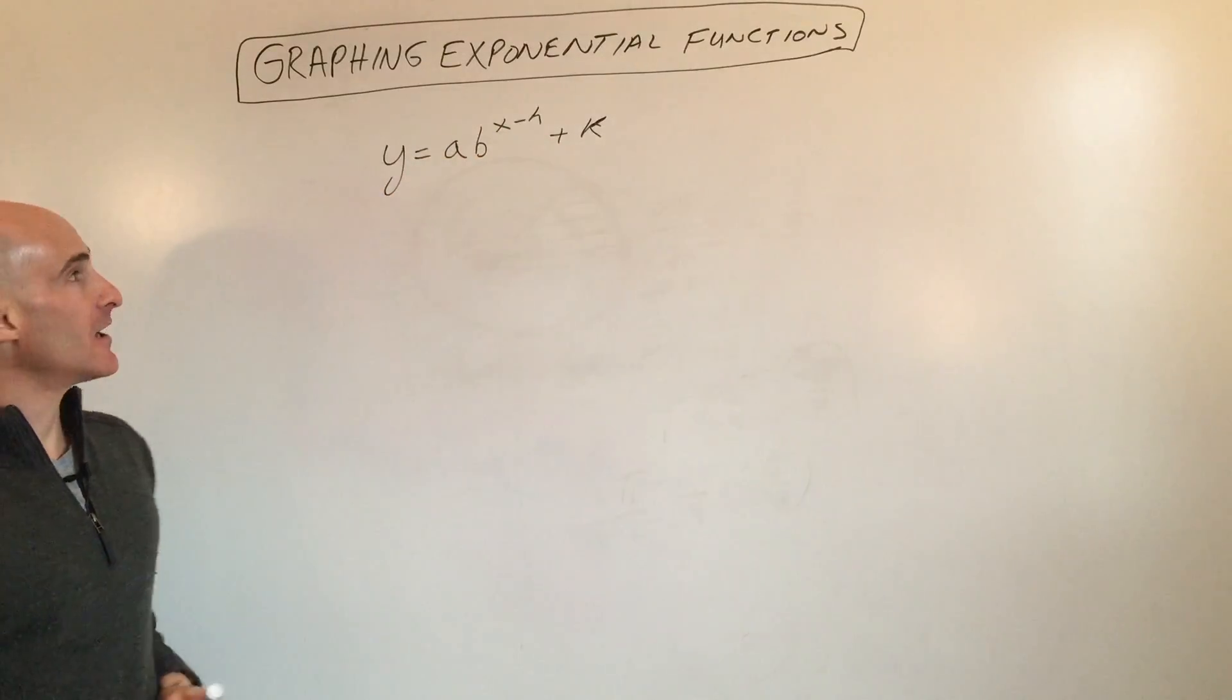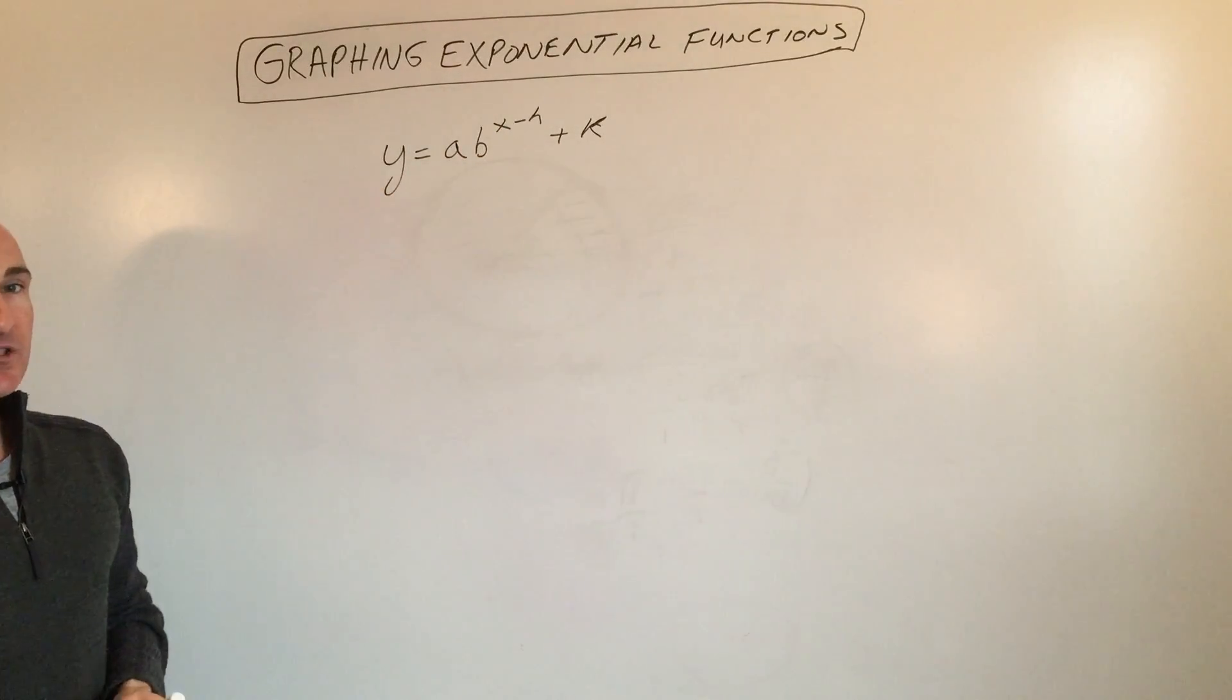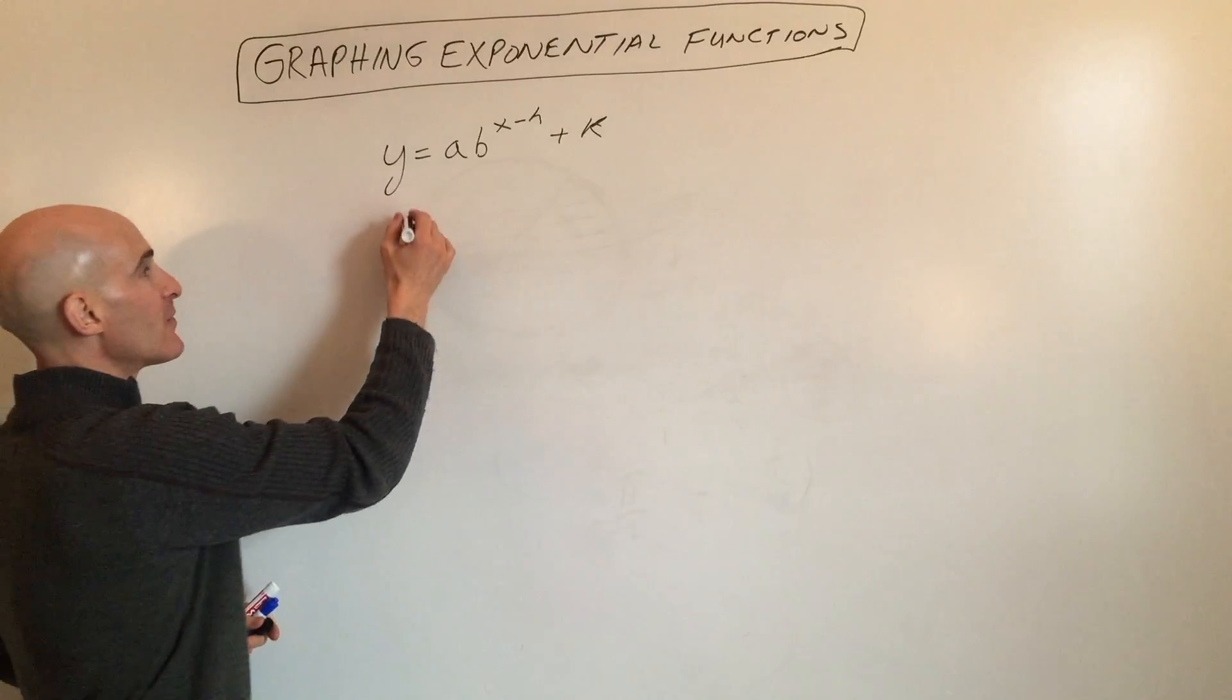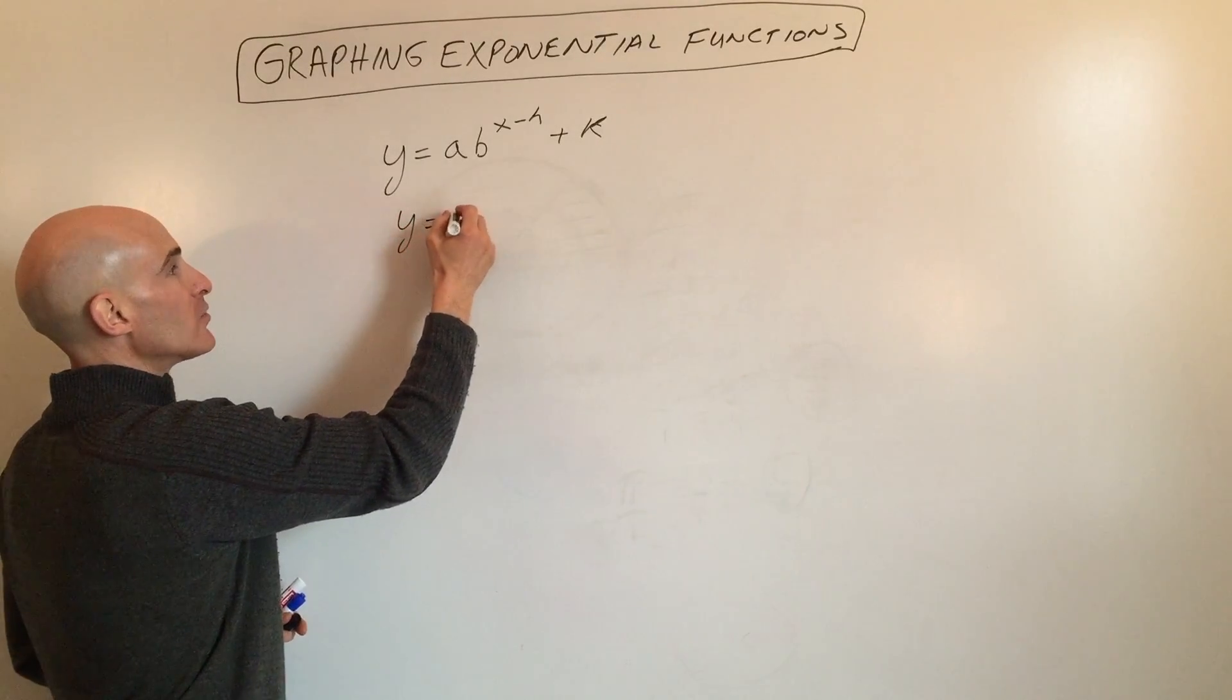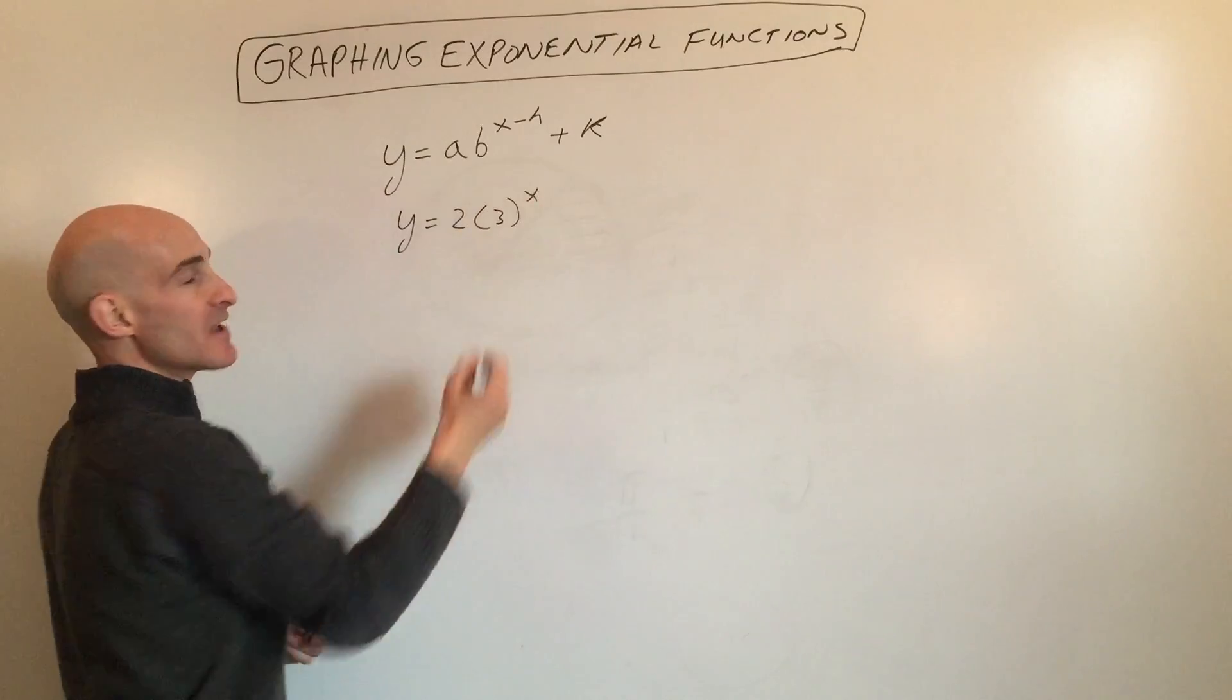So ab to the x minus h plus k. Let's take a look at some examples of these graphs. If we look at a basic graph, y equals 2 times 3 to the x.